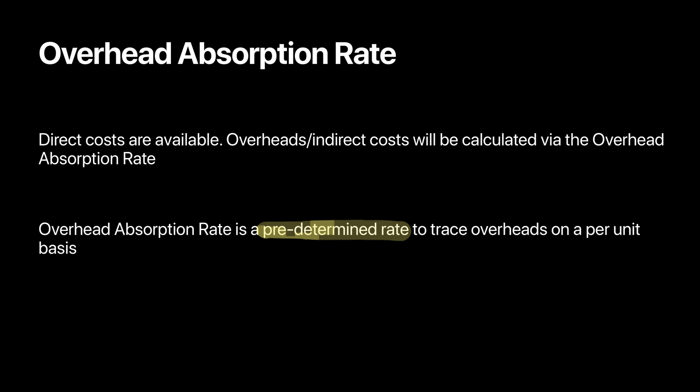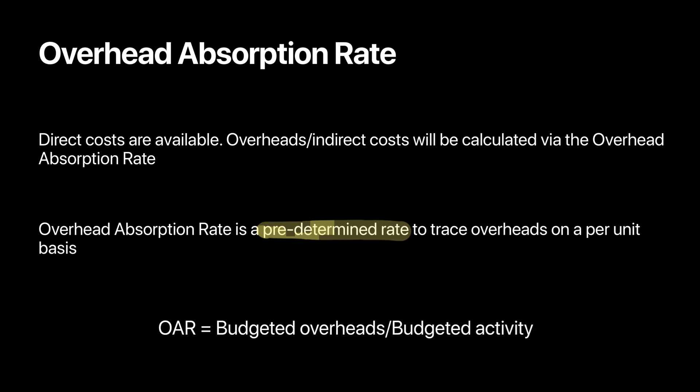The formula for overhead absorption rate is: Overhead Absorption Rate = Budgeted Overheads ÷ Budgeted Activity. 'Budgeted' means estimated. Budgeted activity means you need to trace these overheads to a suitable activity that links the overhead to the output. We'll discuss budgeted activity further in later videos, but let's look at an example to understand what the overhead absorption rate implies and how it helps a manager.